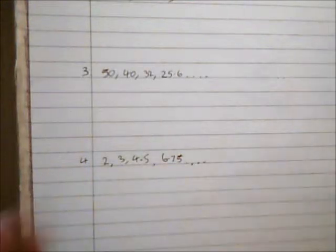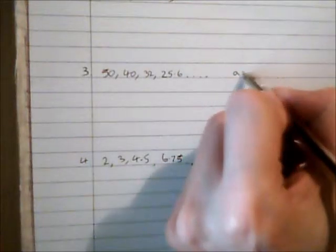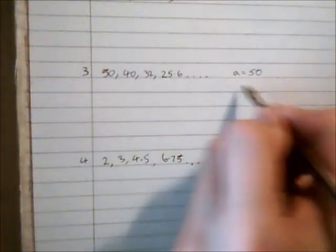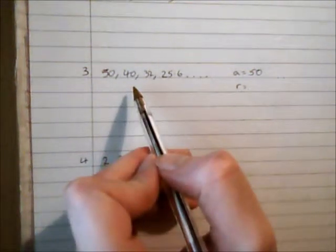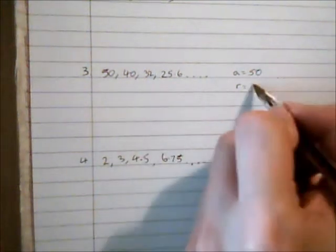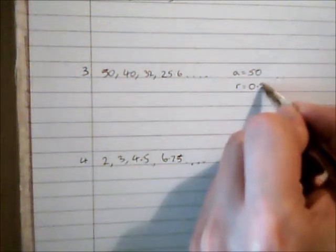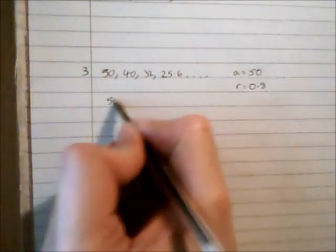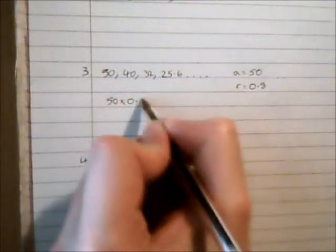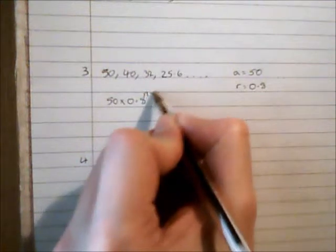So this third one, we've got a value of a being 50 and a value of r. So what are we multiplying 50 by to get to 40? Well, that's 0.8. So our nth term is therefore 50 multiplied by 0.8 to the n minus 1.